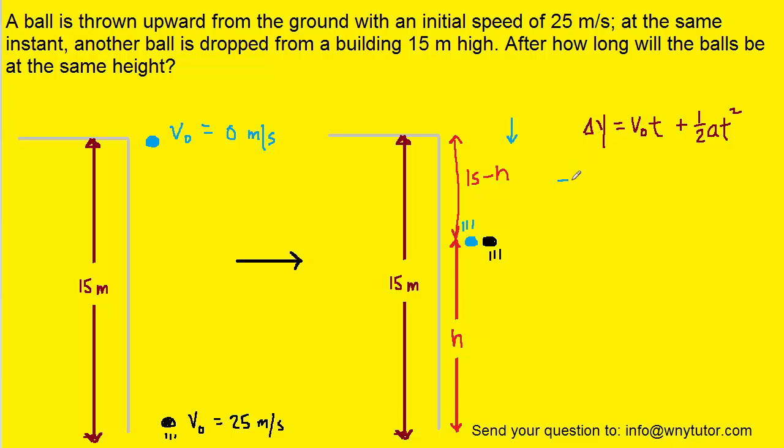But because it's moving downward overall, we cannot just plug in 15 minus h for this displacement or delta y. We have to plug in negative 15 minus h. It's very important to understand that because displacement delta y must include the direction. Displacement is a vector quantity, so we must include a direction. We're going to put a negative sign there to indicate that the blue ball has a negative or downward displacement.